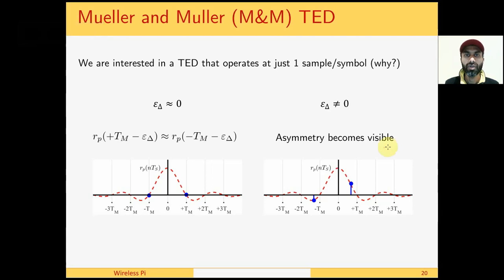One question we have not discussed so far is that our timing error detectors are operating at multiple samples per symbol. This was the case we saw in derivative TED, and we also saw that the early-late TED and the zero-crossing TED work at two samples per symbol. Is it possible to have a TED that operates at one sample per symbol?